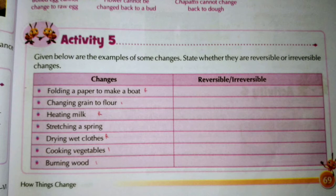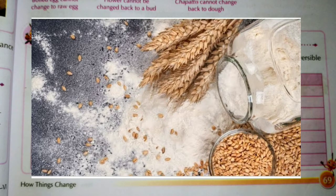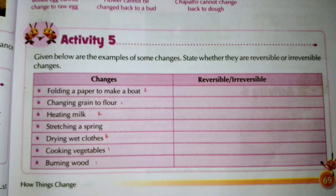The second one is changing grain into flour. We cannot change flour back into grain, so that is an irreversible process.